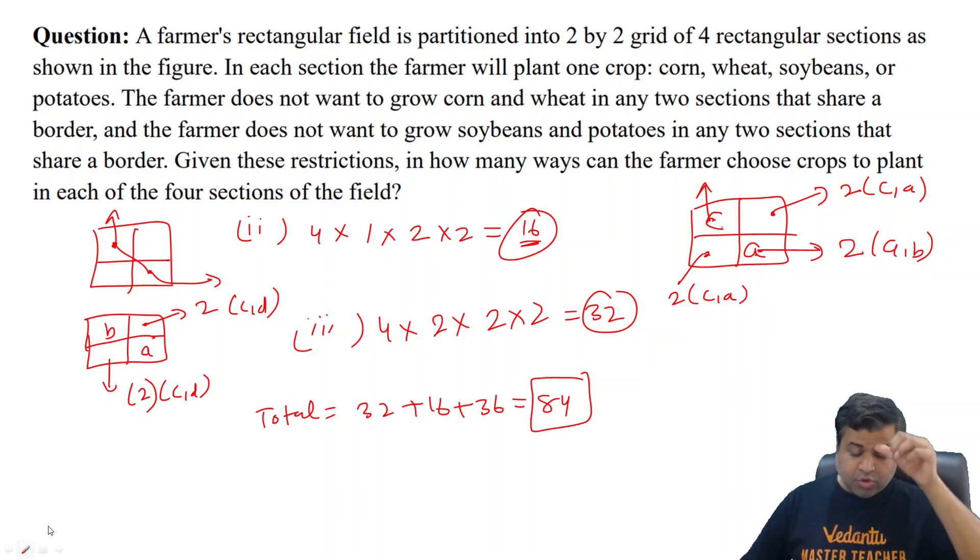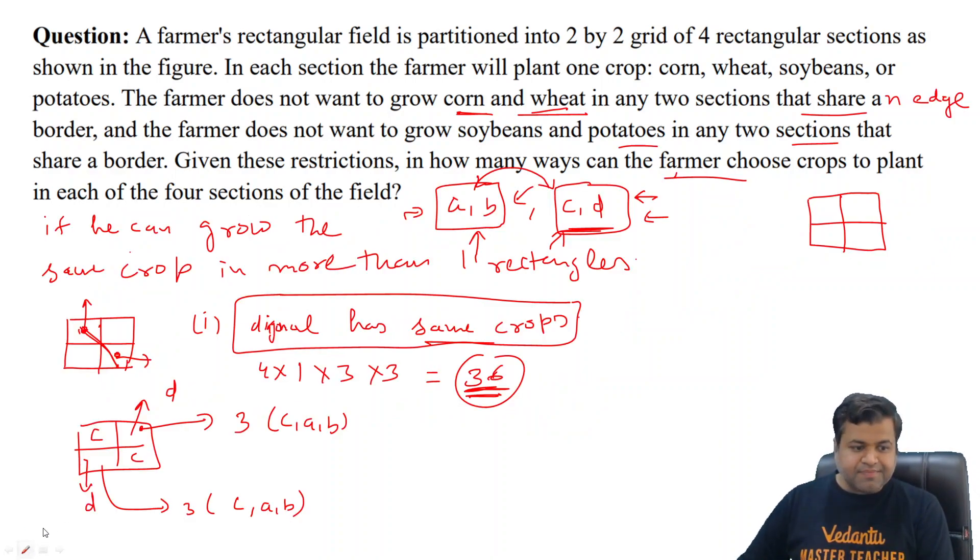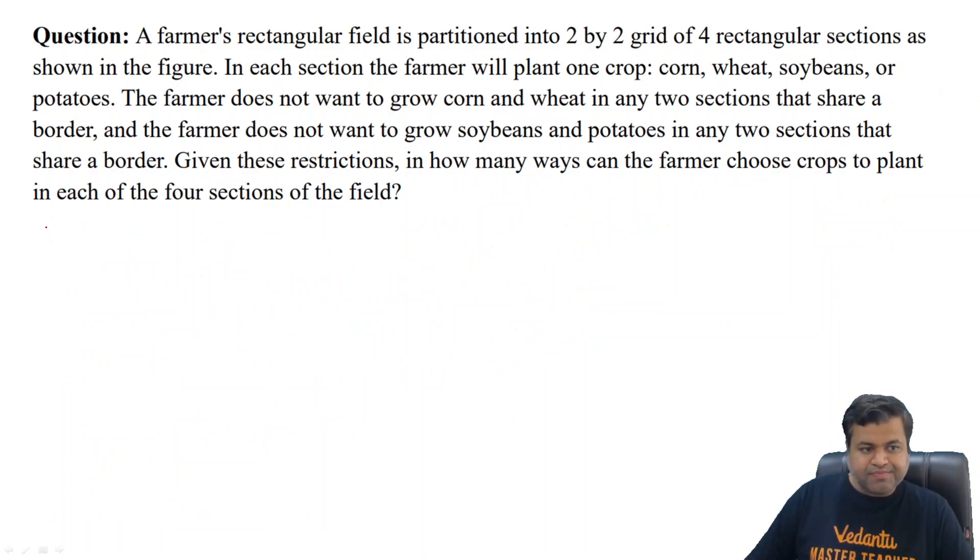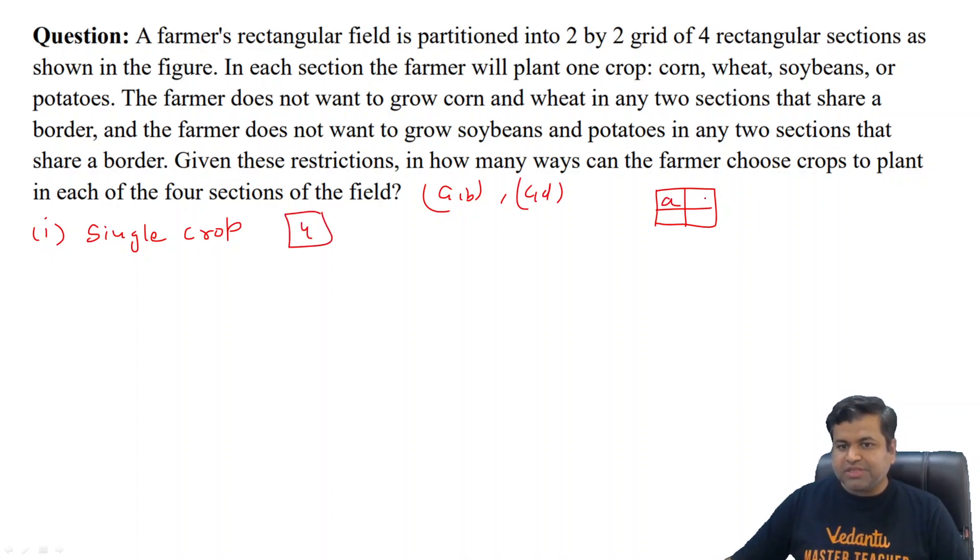Now let's see one more way of doing this question. We will consider four cases. First, we place only single crop. What are the ways? We can select either A, B, C, or D, so there are four options. Either we can place A in all the squares, or B, or C, or D.